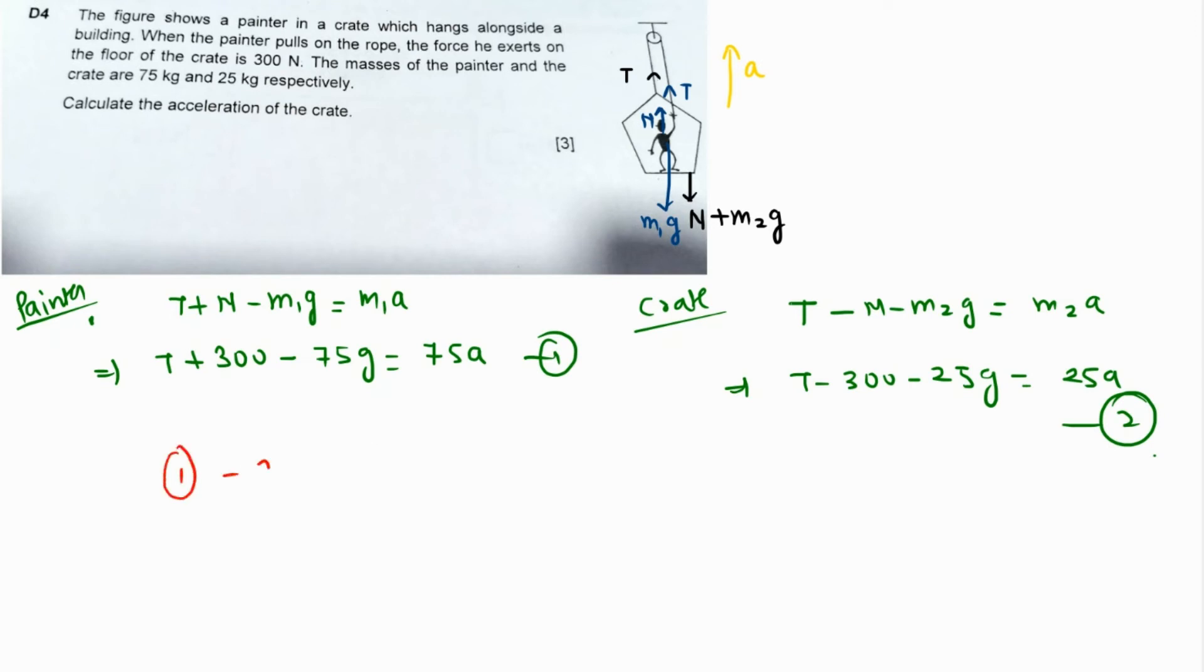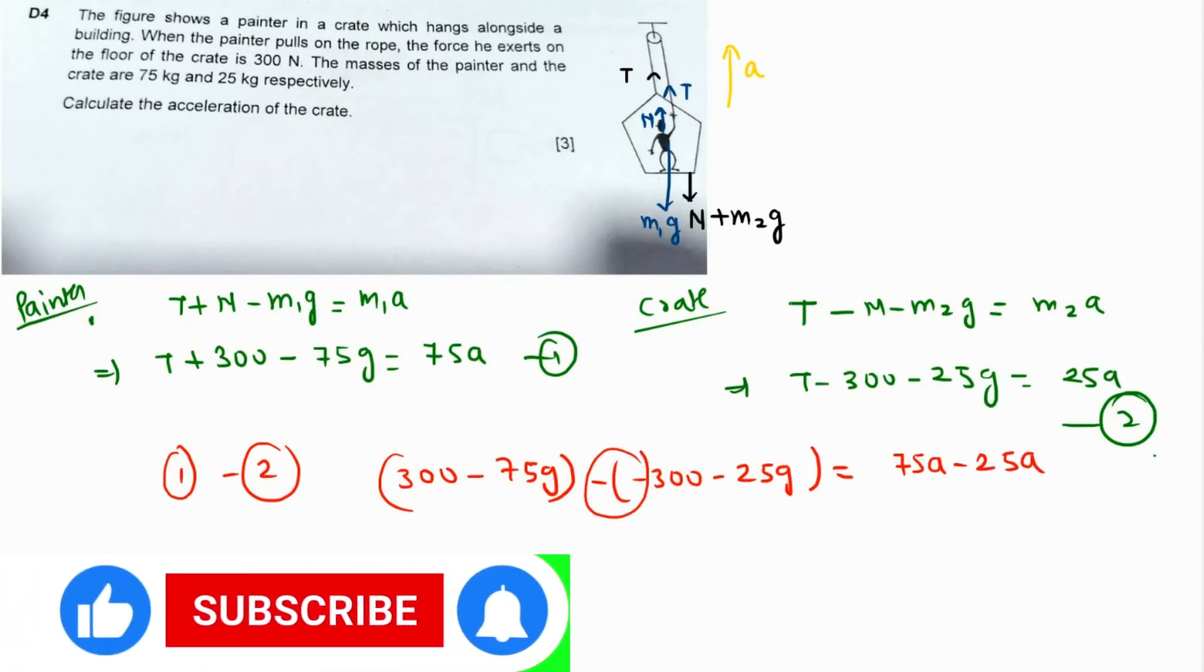Subtracting equations one and two, T and minus T cancel out. It becomes: (300 minus 75G) minus (minus 300 minus 25G) equals 75A minus 25A. Since minus and minus is plus, this becomes 600 minus 75G plus 25G equals 50A.